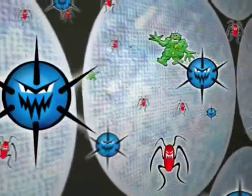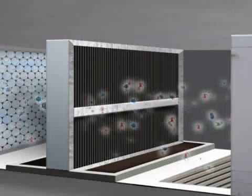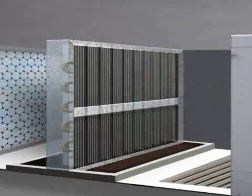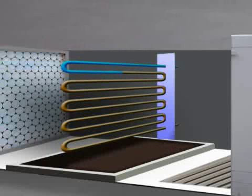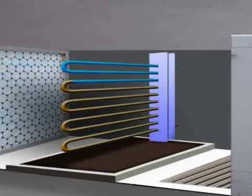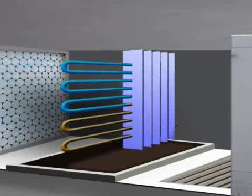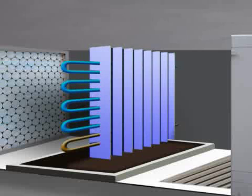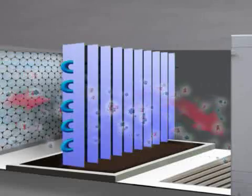The cooling coils are made up of heat exchange plates, joined closely together by tubes. Cold liquid is pumped through the tubes, cooling the plates, which then cools the air.